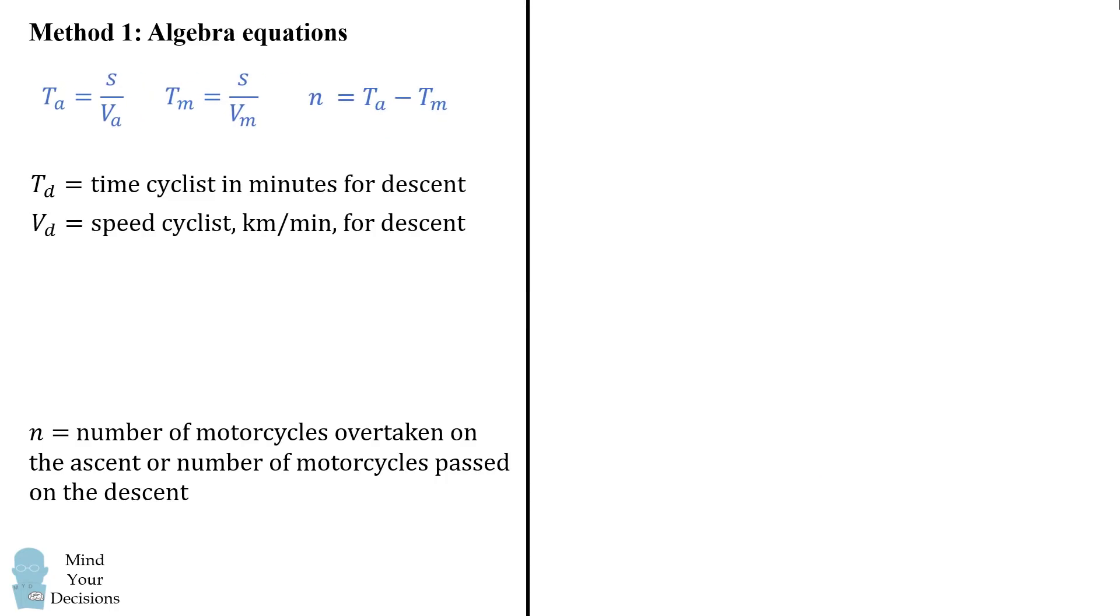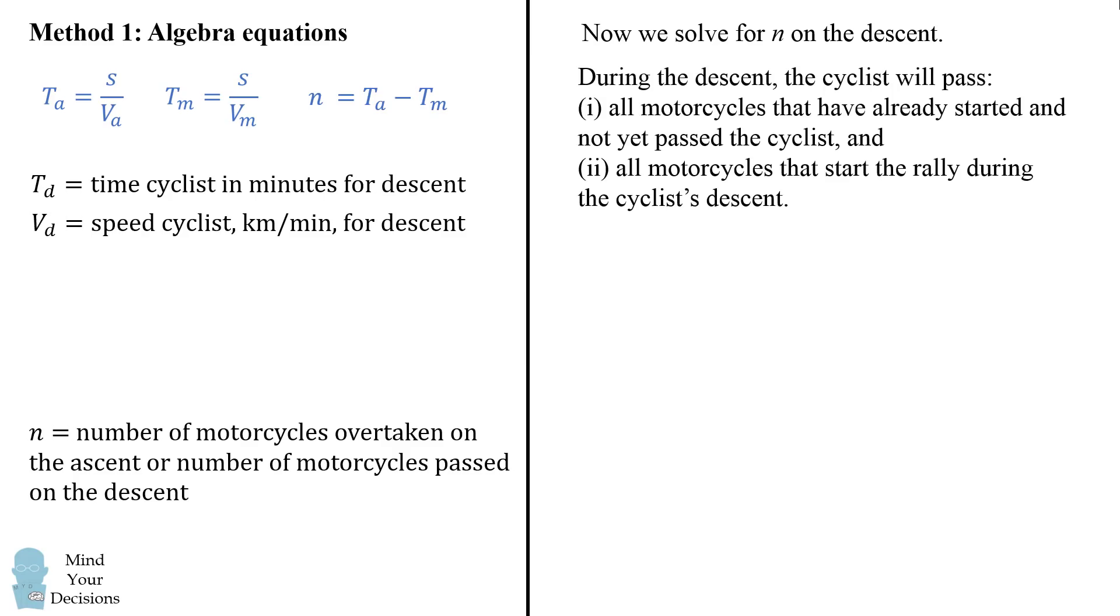Now let's solve for a similar equation for n on the descent. During the descent the cyclist will pass motorcycles for two different cases. The cyclist will pass 1: all motorcycles that have already started but not yet passed the cyclist, and 2: all motorcycles that started the rally during the cyclist's descent. So let's solve for each case.